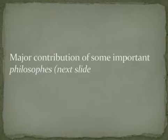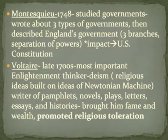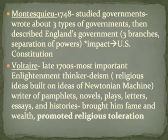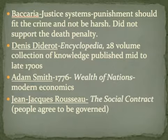Key philosophes of the Enlightenment include: Montesquieu, who studied governments, described England's three branches with separation of powers — directly influencing the U.S. Constitution. Voltaire, perhaps the most important Enlightenment thinker, was a Deist who wrote pamphlets, novels, plays, and essays, and whose most important issue was promoting religious toleration. Beccaria wrote about justice systems, arguing that punishment should fit the crime — stealing bread should not get the same punishment as murder — and he opposed the death penalty as barbaric.